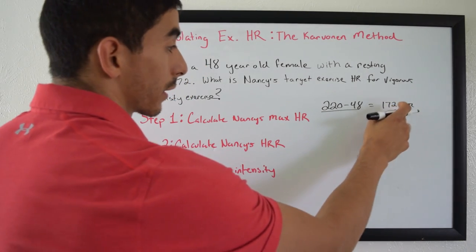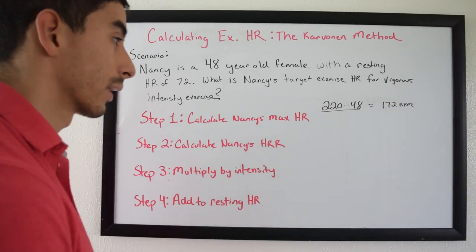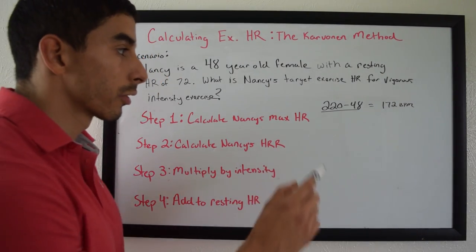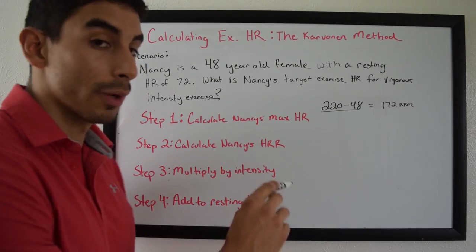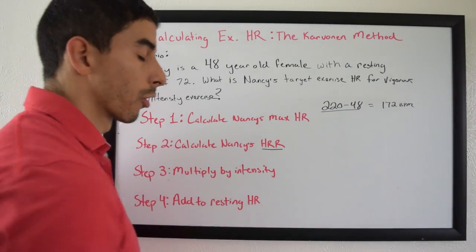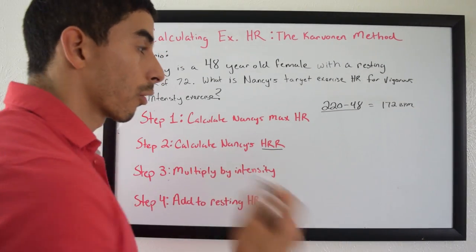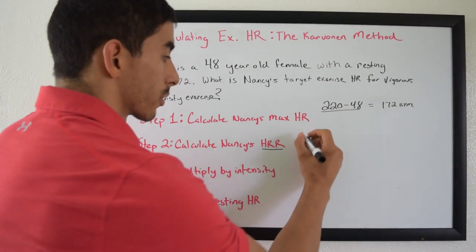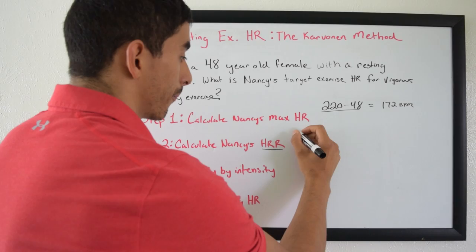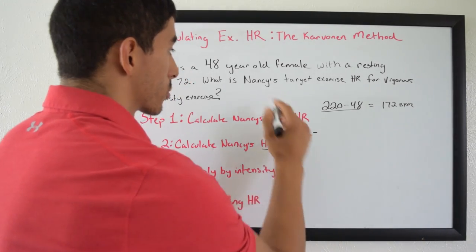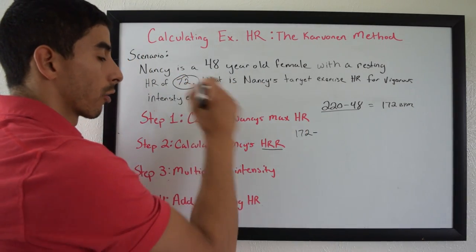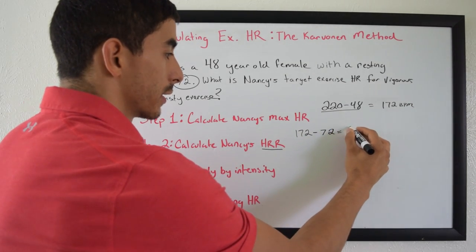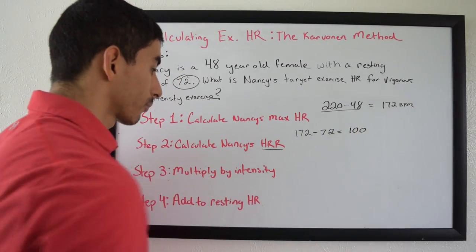172 bpm is the predicted maximum heart rate that Nancy can actually get to if she was exercising full out. Next — Step 2 — you're going to calculate Nancy's heart rate reserve (HRR). Heart rate reserve is simply maximum heart rate minus resting heart rate. So 172 minus 72 gives you 100.